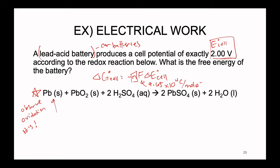Starting with lead solid: since it is a free element, its oxidation number is zero. In lead oxide (PbO₂), we consider oxygen first — each oxygen gets a −2 oxidation number. To keep the compound neutral, the lead must have a +4 oxidation number. For sulfuric acid (H₂SO₄), each hydrogen gets +1. Each of the four oxygens gets −2, and in order to keep the compound neutral, the sulfur must have a +6 oxidation number.